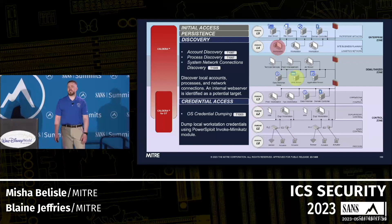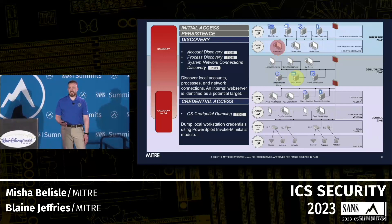Now we'll move on to some discovery tactics — all included in Caldera core. Some account discovery, process discovery, and network enumeration. With network enumeration we find a web server in the DMZ, and from there we can do some scanning. We'll also dump credentials from that enterprise workstation — and fingers crossed, maybe some of those creds will be reused lower down in the network.